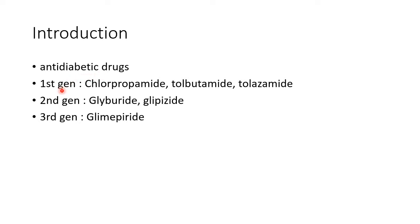The first generation sulfonylureas include chlorpropamide, tolbutamide, and tolazamide. The second generation sulfonylureas include glibenclamide and glipizide. The third generation sulfonylureas include glimepiride.